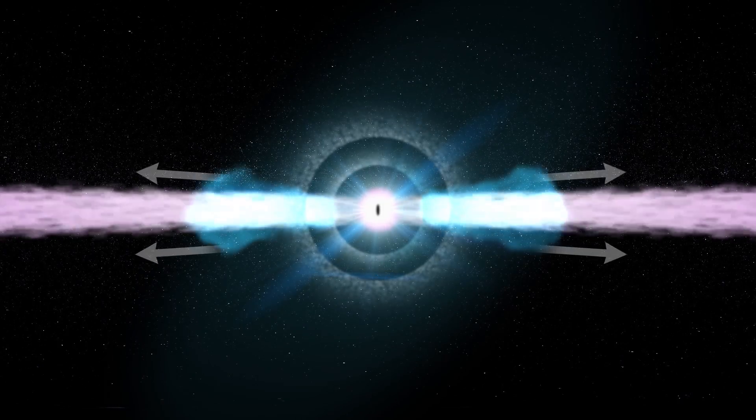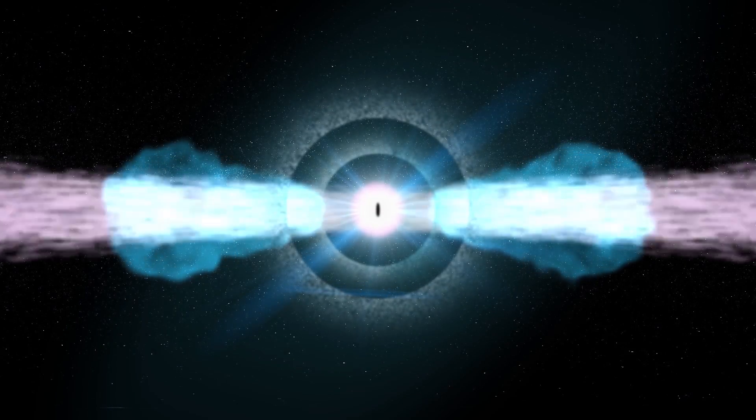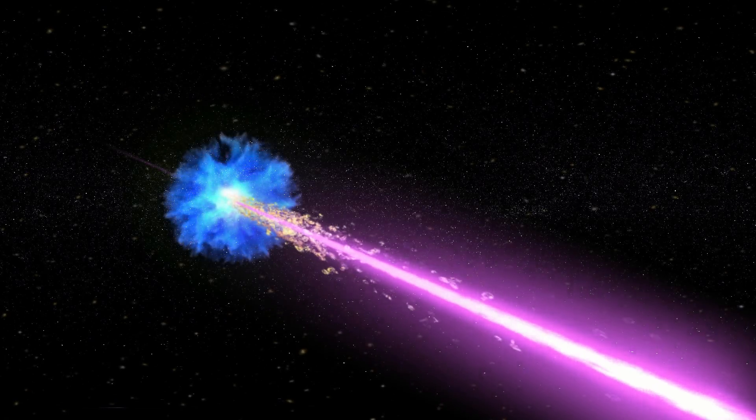The weaker gamma ray burst suggests it was produced when broader jets slammed into a cocoon of matter surrounding the merged neutron stars. While this finding is home to a lot of firsts, it won't be the last.